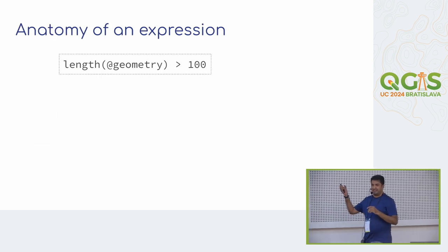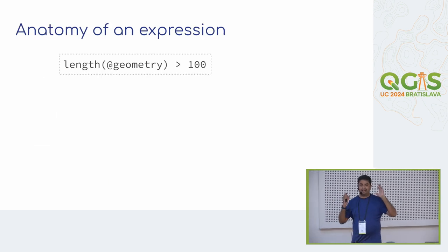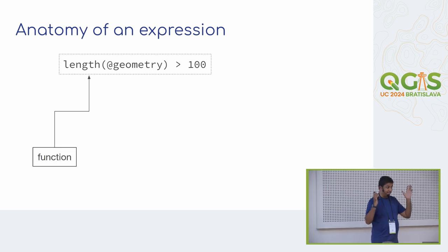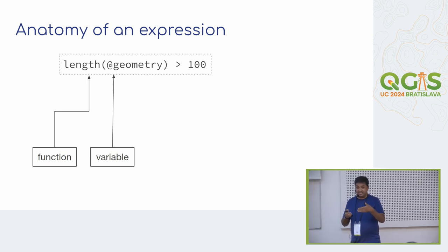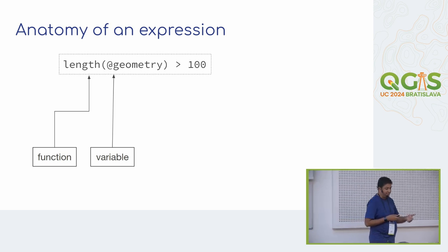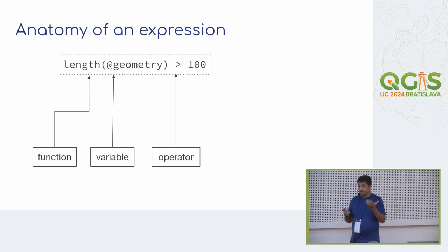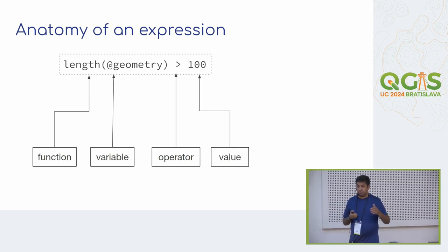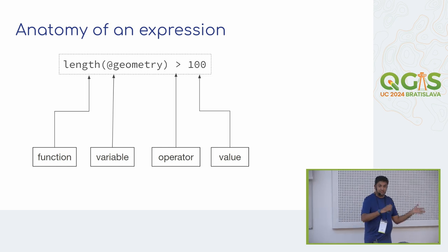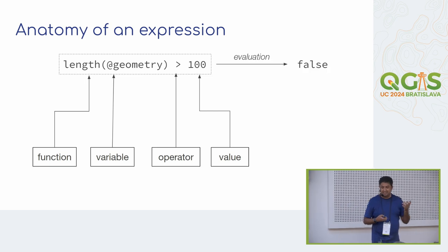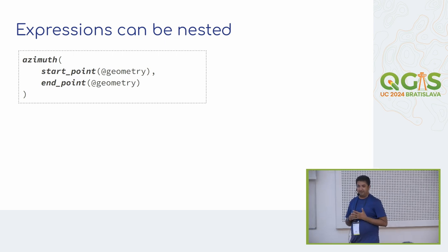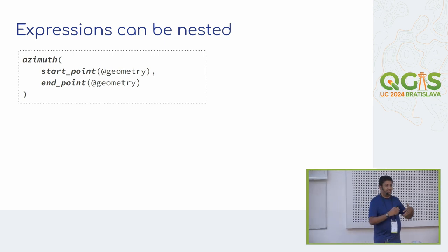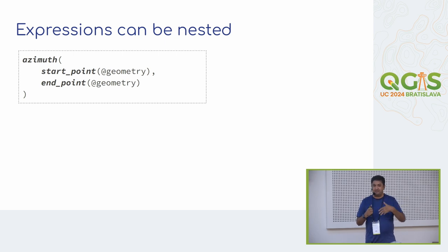Let's break down an expression. We have: length(@geometry) > 100. Here we have the function called 'length' — we're using parentheses. @geometry refers to the geometry of the feature the expression is being evaluated for. Then we say check: is it greater than 100? That's an operator and a value. The QGIS expression engine evaluates this and the output is either true or false.